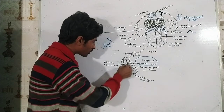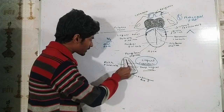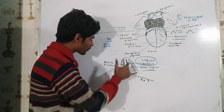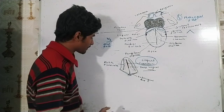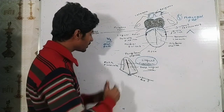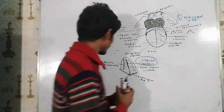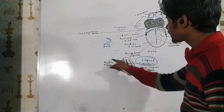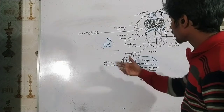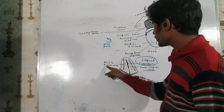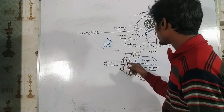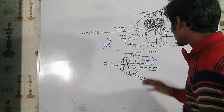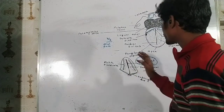On either side of the lingual frenulum, there are lingual veins present. More laterally you can find the plica fimbriatae, which are folds present more laterally to the deep lingual veins.